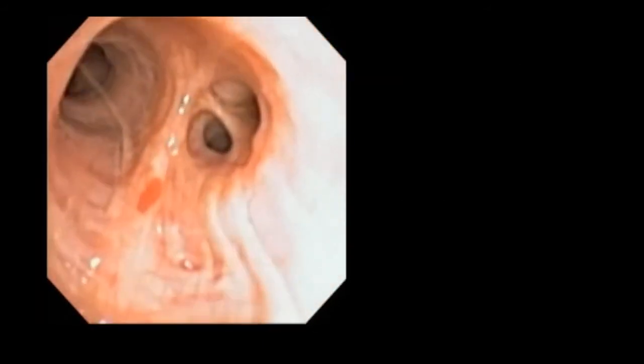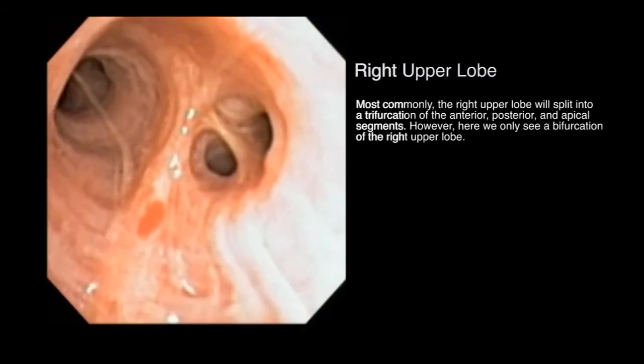Most commonly, the right upper lobe will split into a trifurcation of the anterior, posterior, and apical segments. However, here we only see a bifurcation of the right upper lobe.